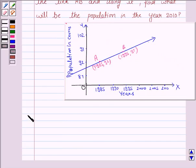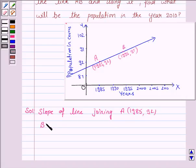Let us now proceed with the solution. We first find the slope of the line AB. So, slope of line joining these two points: A (1985, 92) and B (1995, 97).